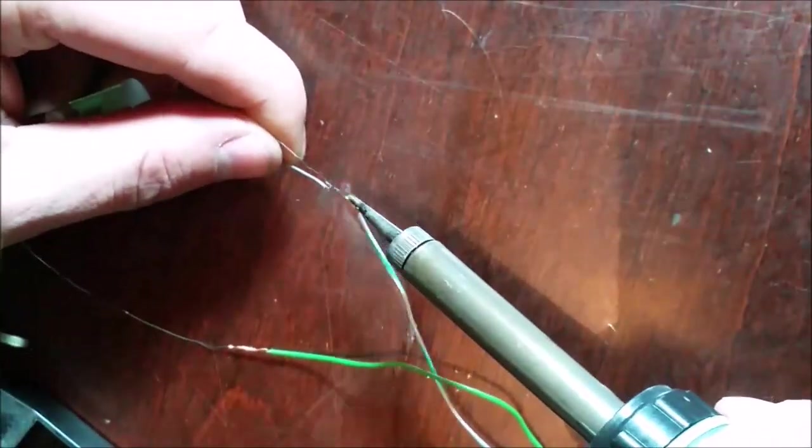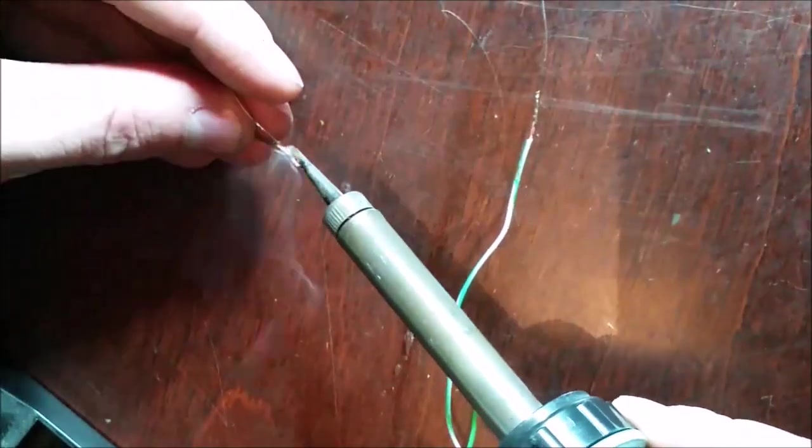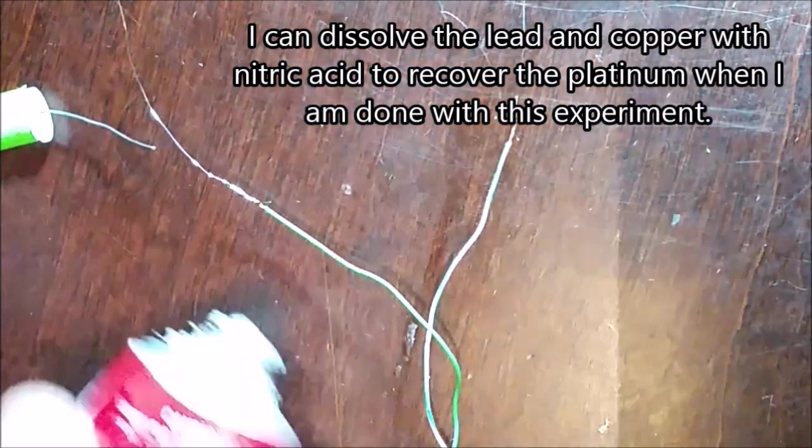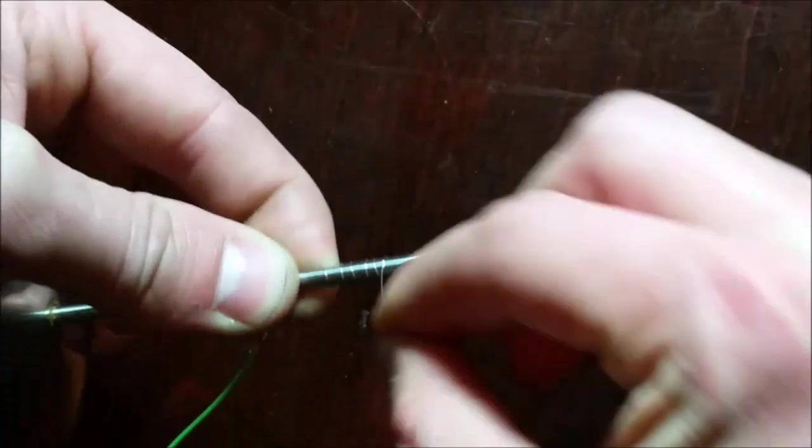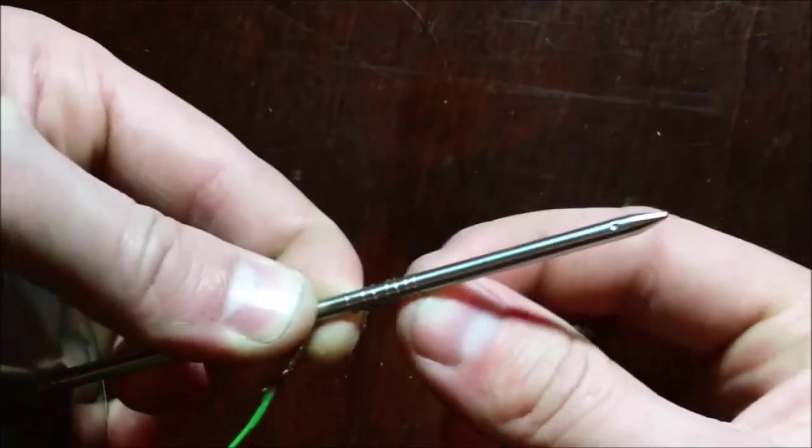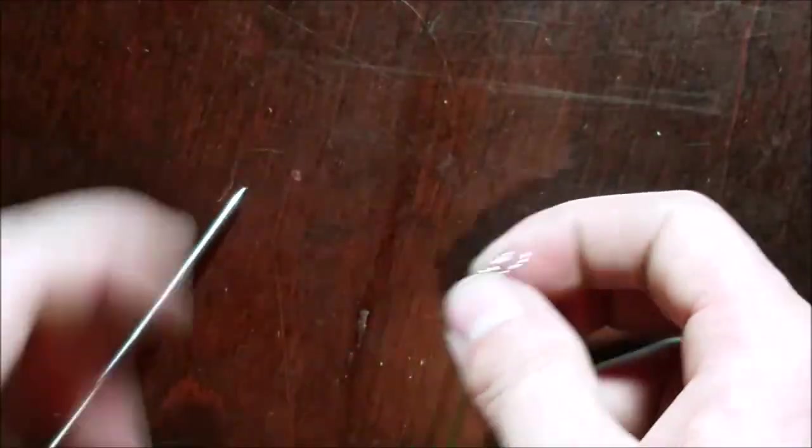So first I'm going to solder the platinum wire onto the copper wire. This will make it easier to work with and it'll make it so I can use less platinum overall. Now I protect the connections with some glue to keep the copper from corroding. Now I just wrapped the platinum around something so that I have a lot of surface area in a small space. Now the electrodes are pretty much done.